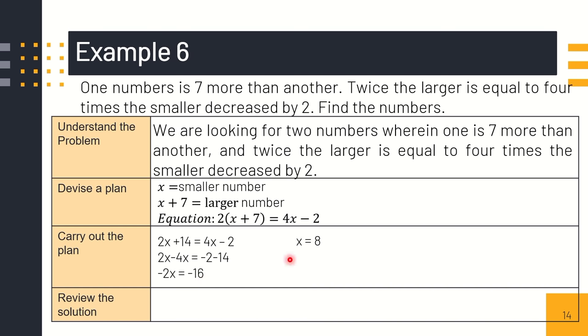So the smaller number is 8. And the larger number is, if x plus 7, so x plus 7, that is 15. One number is 7 more than another, correct? Therefore, 15 is 7 more than 8. Twice 15, which is 30, is 4 times 8 minus 2. The two numbers are 8 and 15.